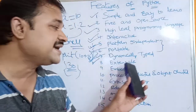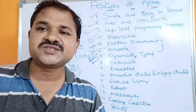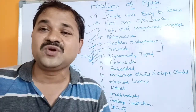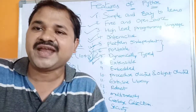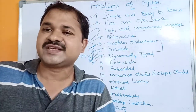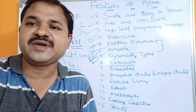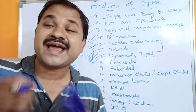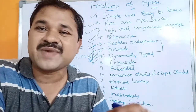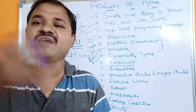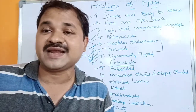The next feature is that Python is an extensible programming language. Since Python is open source, its code is freely available, so you can make your own modifications and develop your own programming language by adding improvements. In this way, you are extending the Python language, which is why Python is called extensible.